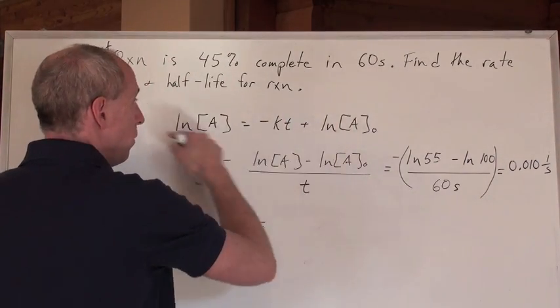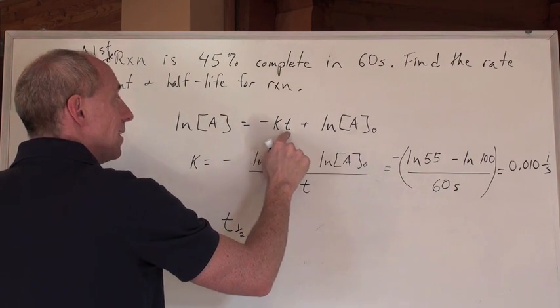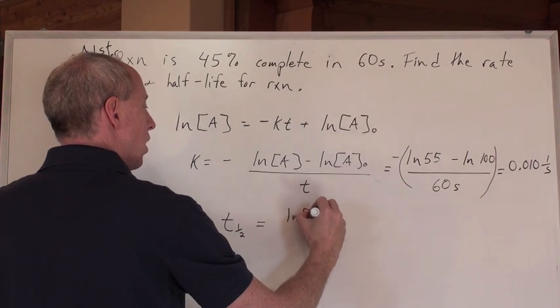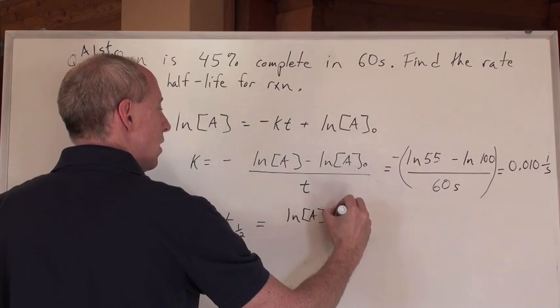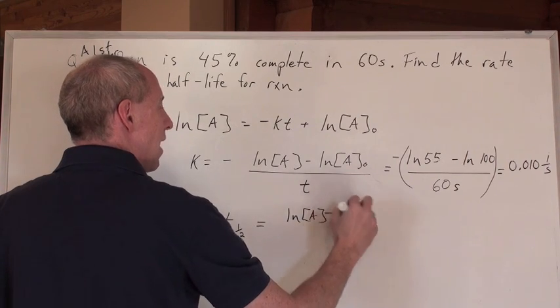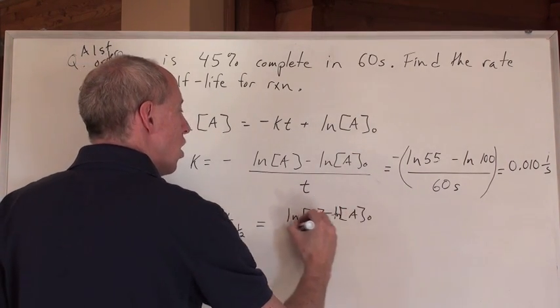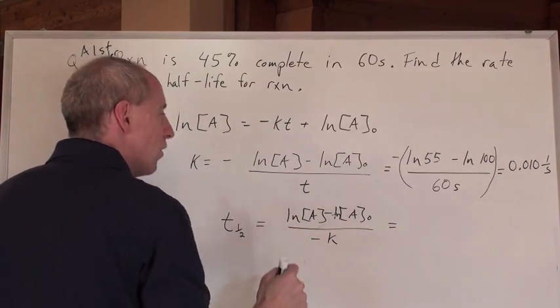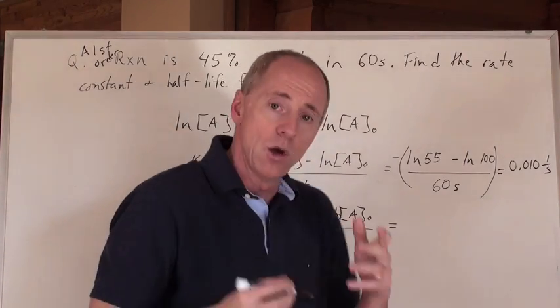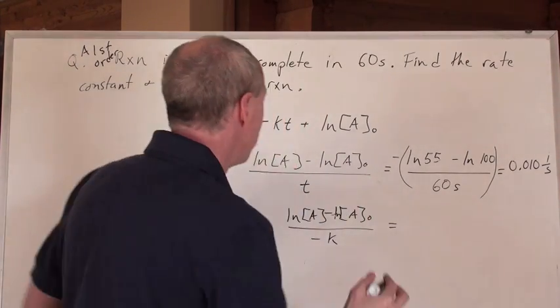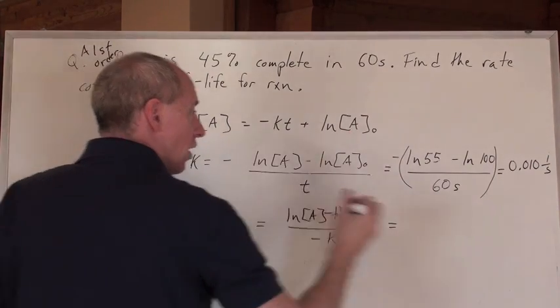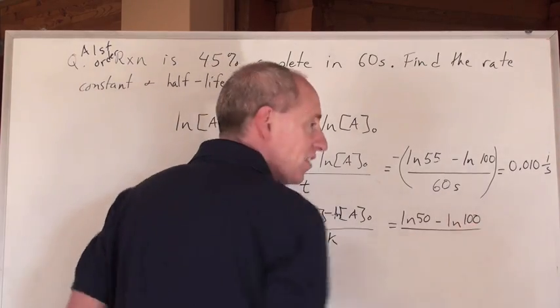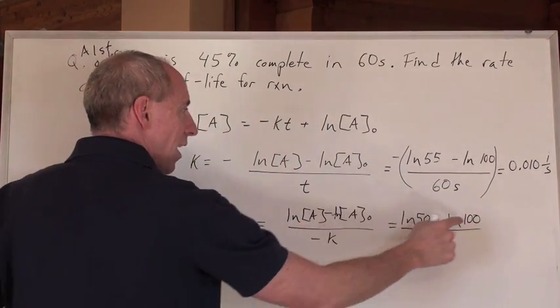When you rearrange this formula to solve for t one half, which is just a t, you're going to have to take the natural log of the concentration minus the natural log of that initial concentration, all divided by negative rate constant. What is the concentration at the half-life? If the initial concentration is 100, your concentration at the half-life is 50. So you plug in 50 here and 100 here.